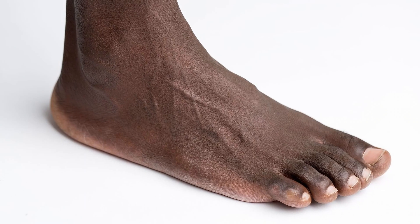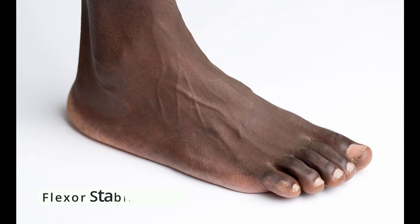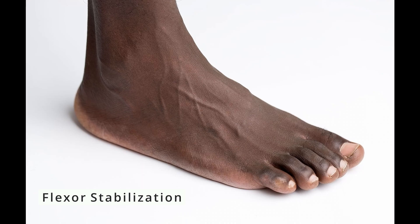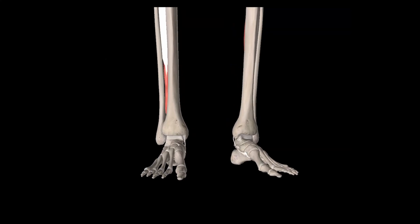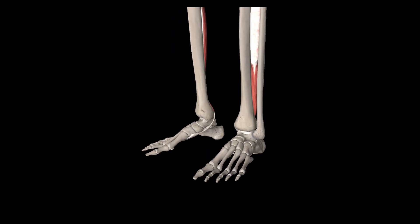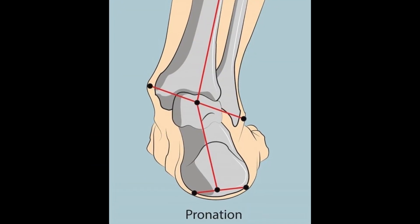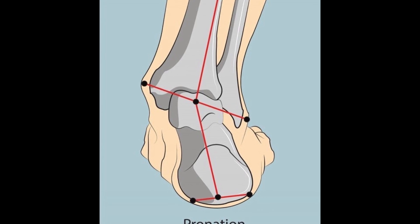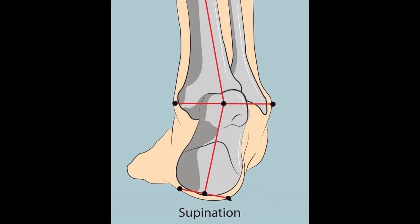By far the most common type of hammer toe origins is flexor stabilization, and this is most commonly seen in the pronated foot. Overpronation leads to hammer toe deformities. Overpronation occurs when the posterior tibial muscle is unable to effectively re-supinate the foot. In order to re-supinate the foot,